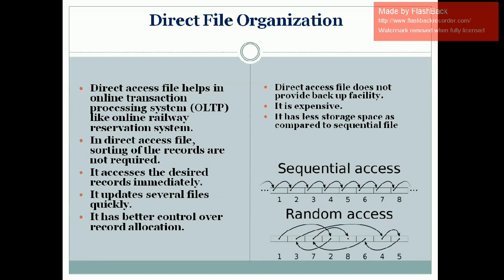Now advantages: direct access file helps for online transactions, like an online railway reservation system. You can easily locate where data is available — no need to search seat by seat. If the 10th seat is empty and not reserved, you can directly reserve it without searching one after another. Also, in direct access files, sorting of records is not required, since data is stored at any location according to the hash function key token. Records can be accessed immediately.